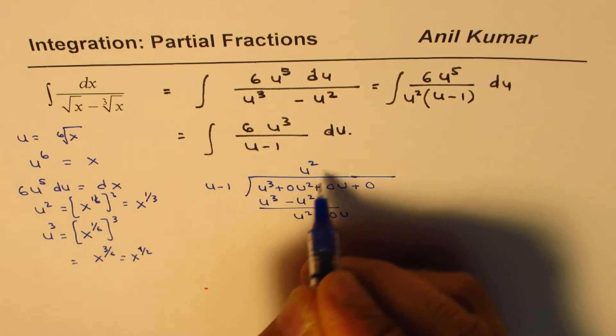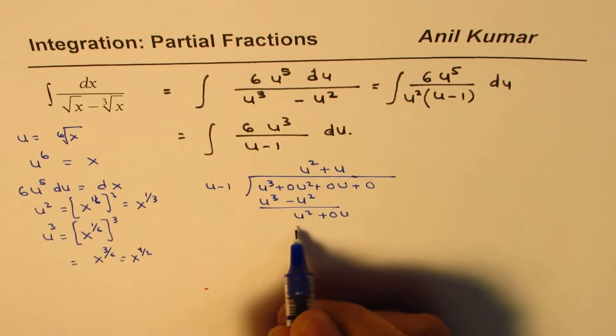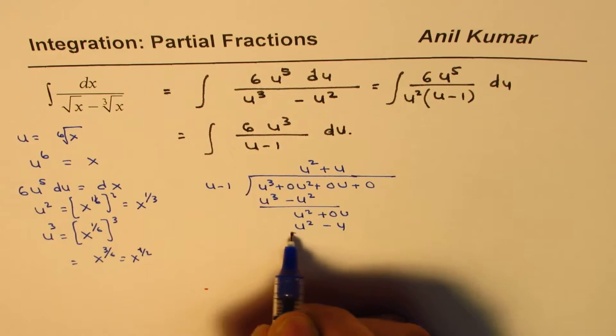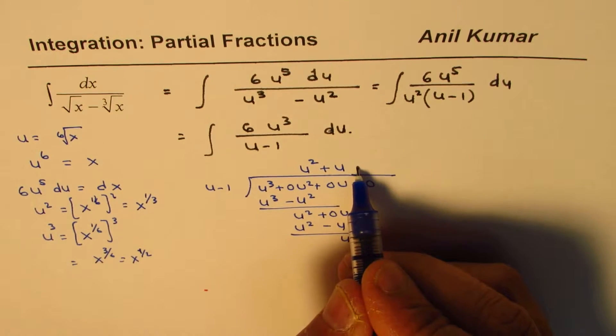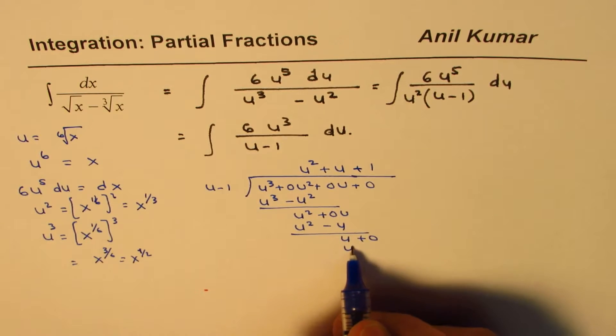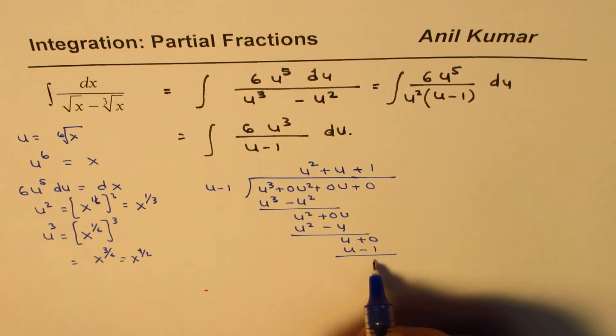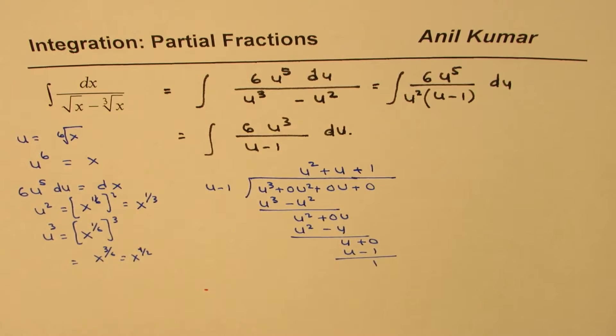So you can do plus u times. So you get u square minus u. And that is u plus 0. And this will go one time. So plus 1. And this is u minus 1. And that gives you 1 as your remainder. Correct.